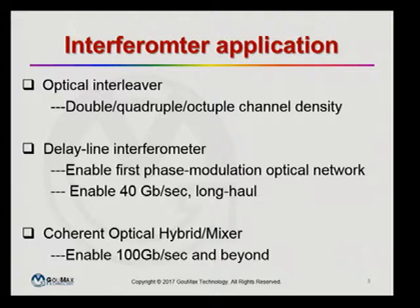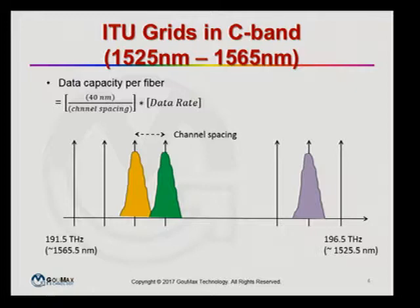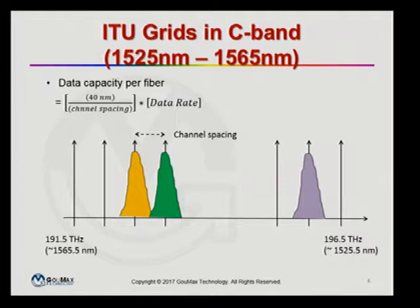In fiber communication there is a certain wavelength range from about 1525 to 1565 nanometers — covering about 40 nanometers — called the C-band. This is the most popular range used to carry information because the fiber material has its smallest absorption here, which is important when transmitting data over a few thousand kilometers. To have higher data transfer capacity within this 40-nanometer range we need to pack in more wavelengths with higher channel density, so channel spacing becomes very important: shrinking the channel spacing gives more channels, and multiplying by the data rate per channel gives total fiber capacity.